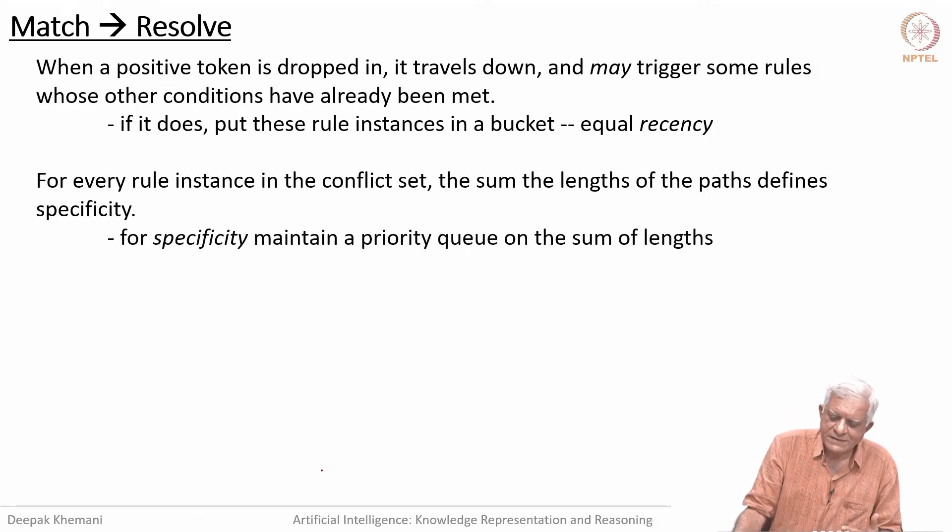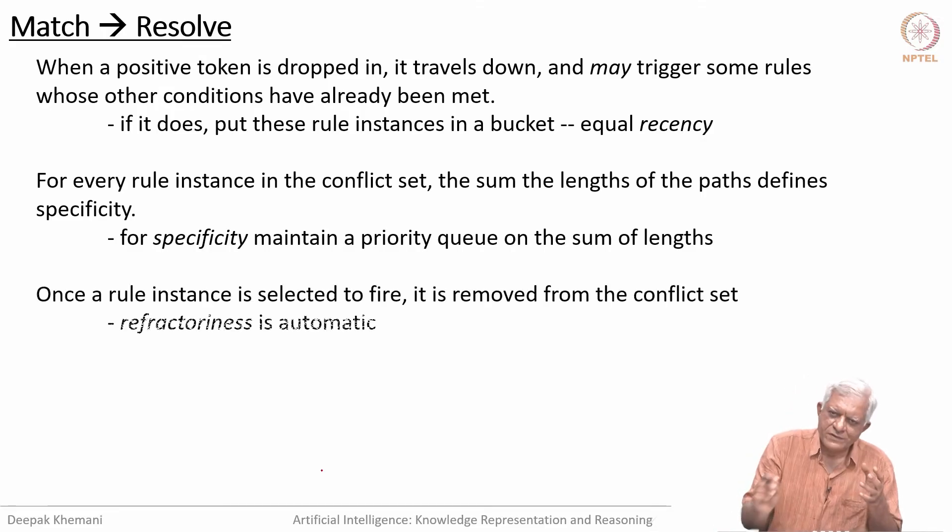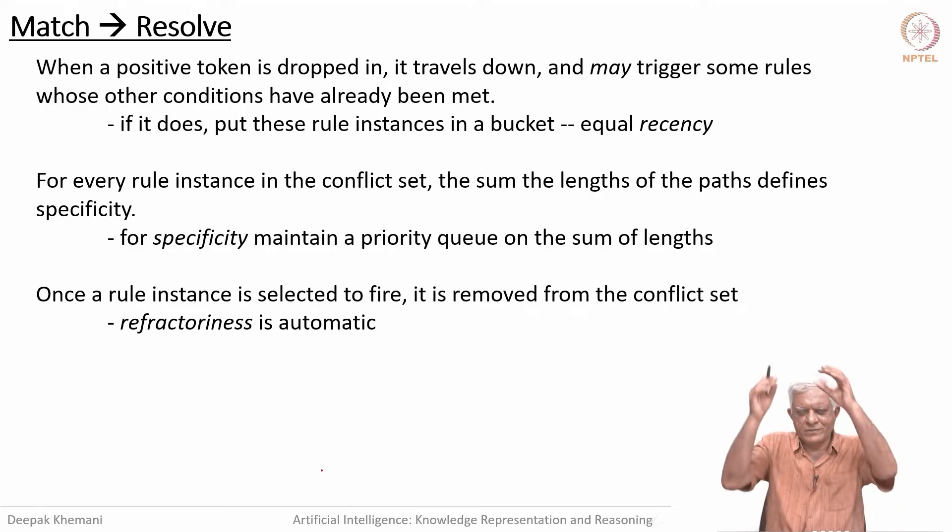If you are using the recency strategy, the moment you put in a working memory element, it traverses and selects some rules. That means you have to select one of those rules for execution. You could have a more refined strategy—if two rules have the same recency, what is the strategy you want to use? For every rule instance in the conflict set, the sum of the lengths of the paths define the specificity. Each path in the discrimination net in the alpha nodes is doing a sequence of tests, and specificity measures how many tests you are doing. If you just add up the paths, you would have specificity, and you could use that if you are using the specificity strategy. Once a rule is selected—just imagine this Rete network—you have put in all the working memory elements; they have traversed down, and certain rules are hanging like fruit from trees. If you think of mangoes, for example, each instance of a rule is hanging from the Rete network. Once you remove it and execute it, it is no longer there in the conflict set. Refractoriness is straightforward to implement; it is automatic.